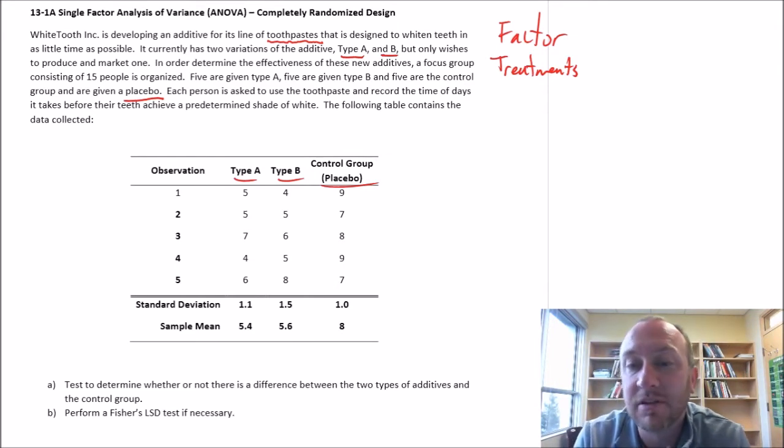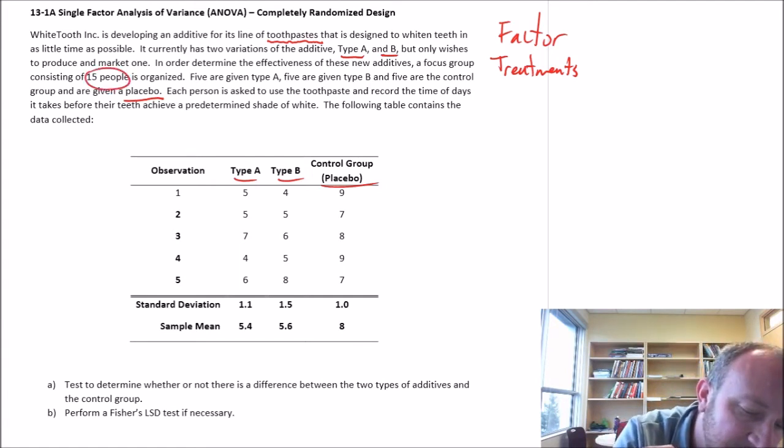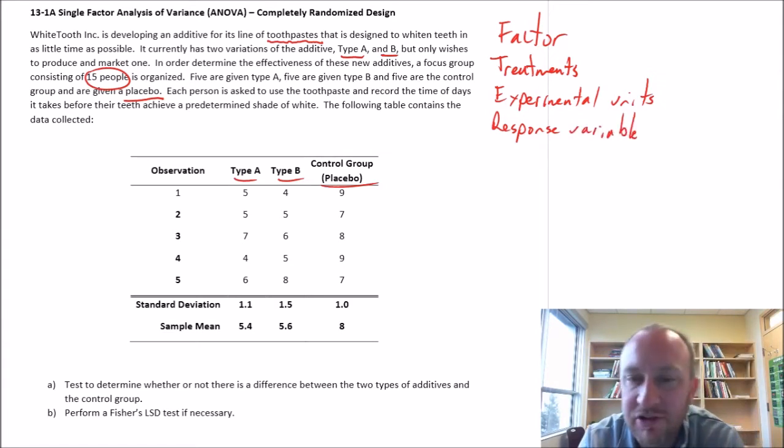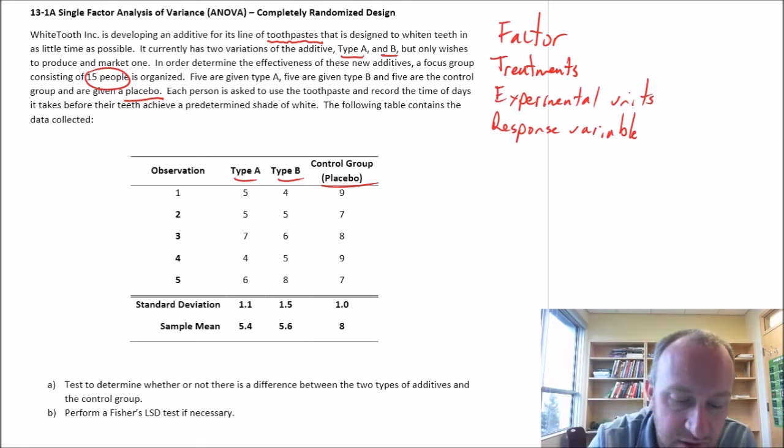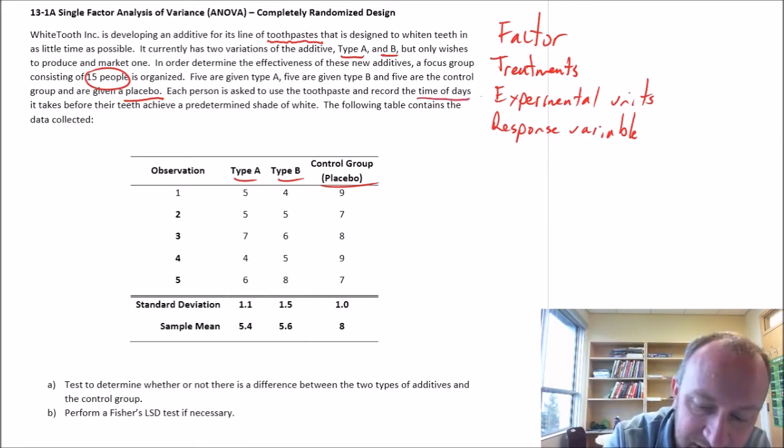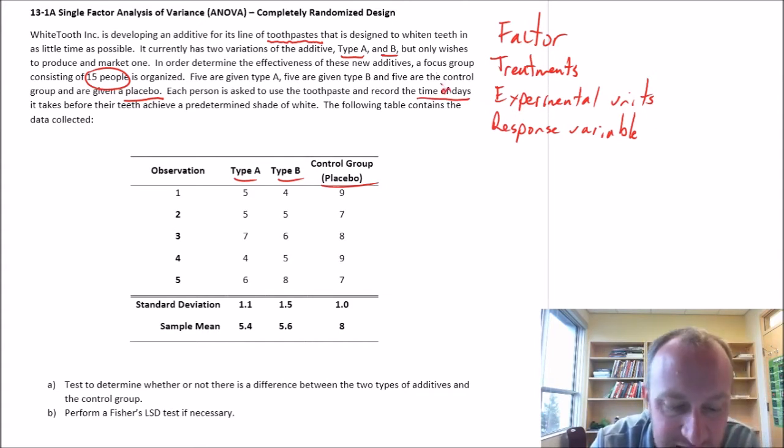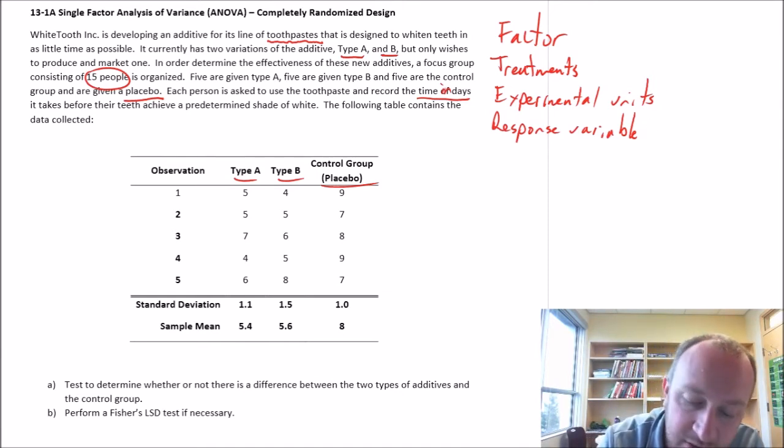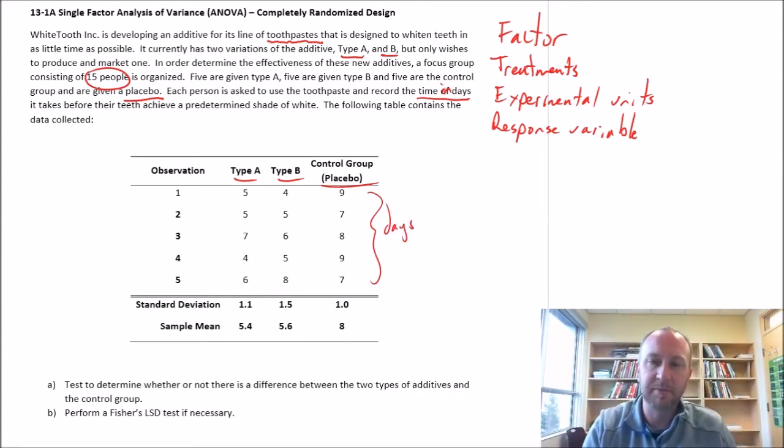The treatments that we use, sometimes called the level of a factor - well, here I have three treatments: type A, type B, and placebo. And you can see that in the data, the way it's organized. What are our experimental units or observational units? These are my 15 people, five in each of my treatments. So our experimental units are the people.